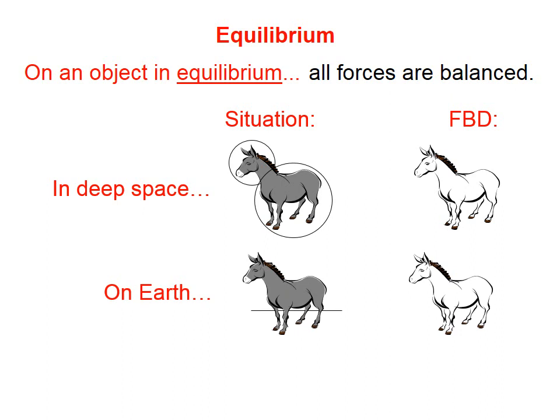Let's take the same donkey — we'll bring him back to Earth now and draw a free body diagram. There's the weight of the donkey, m times g, acting straight down. There's a normal force from the surface of the Earth holding the donkey up, and that's it. Just like in the first example when the donkey was in deep space, the net force on this donkey will be zero. The weight and the normal force cancel each other. These are two examples of objects in equilibrium — the first has no force at all, the second has two forces that exactly cancel, so there's no net force.